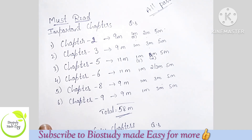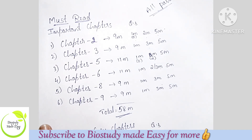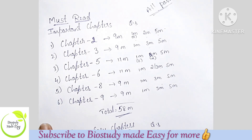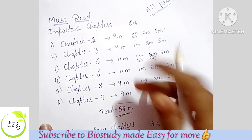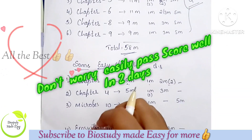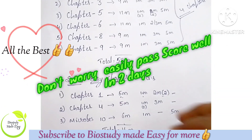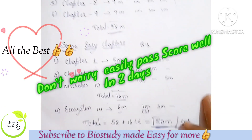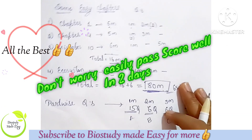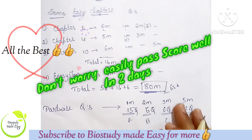So out of 14 chapters, we have to score 60 plus. You have to leave parts A, B, C, D — I am going to choose which chapters.